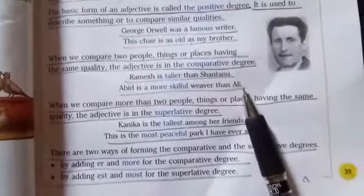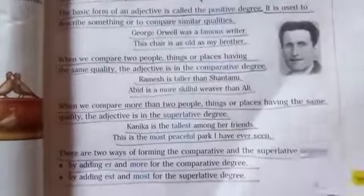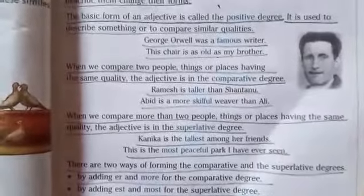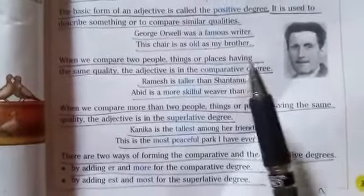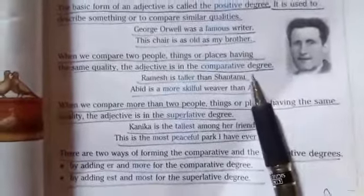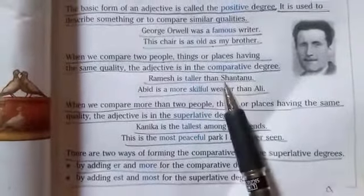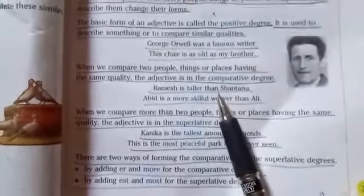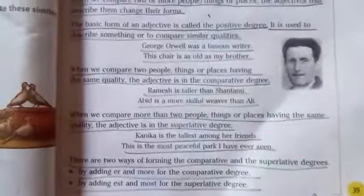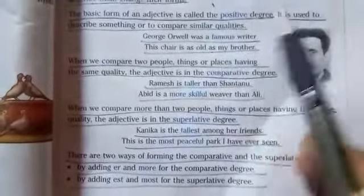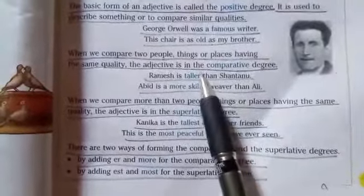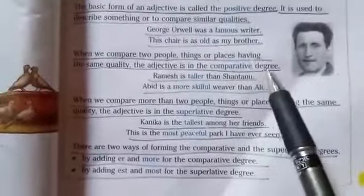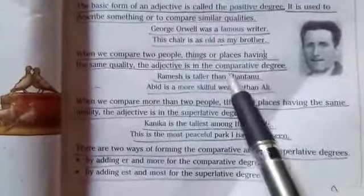Next: 'Abid is more skillful than Ali.' One more thing — after comparative degree of adjective, we use the word 'than' — T-H-A-N. T-H-A-N 'than' means 'se', and T-H-E-N 'then' means time. So whenever we compare between two — either two people, two things, or two places — then we use comparative degree.